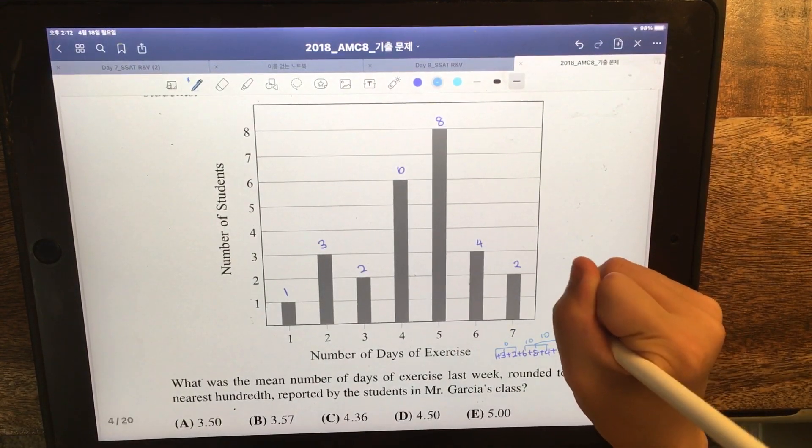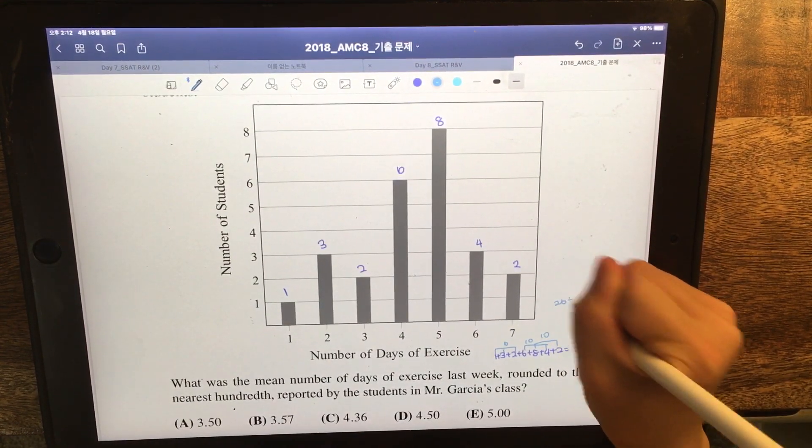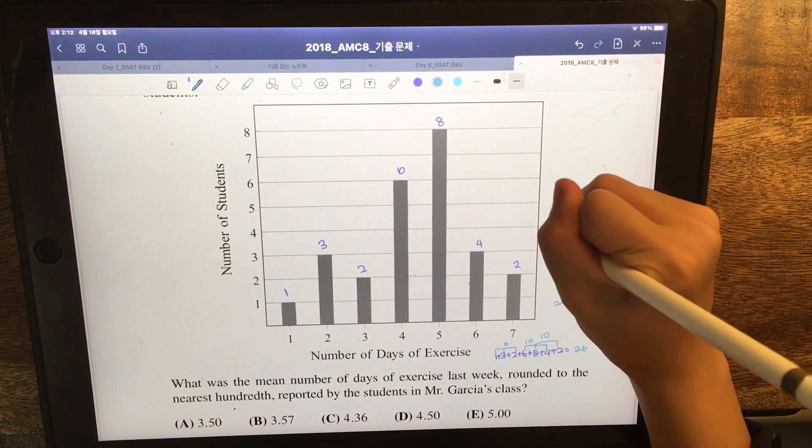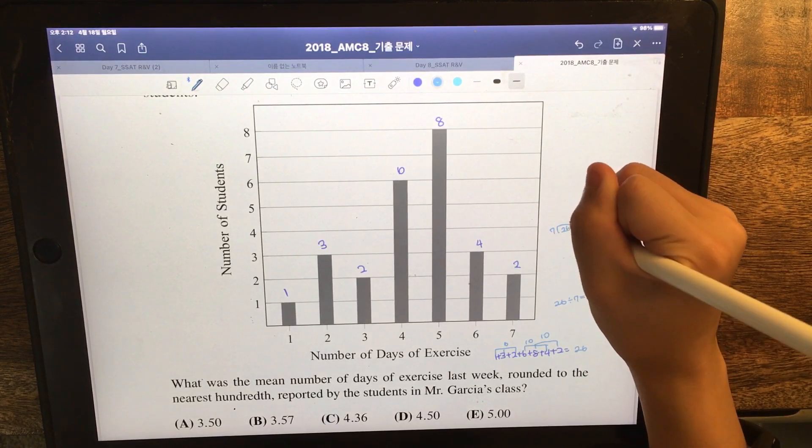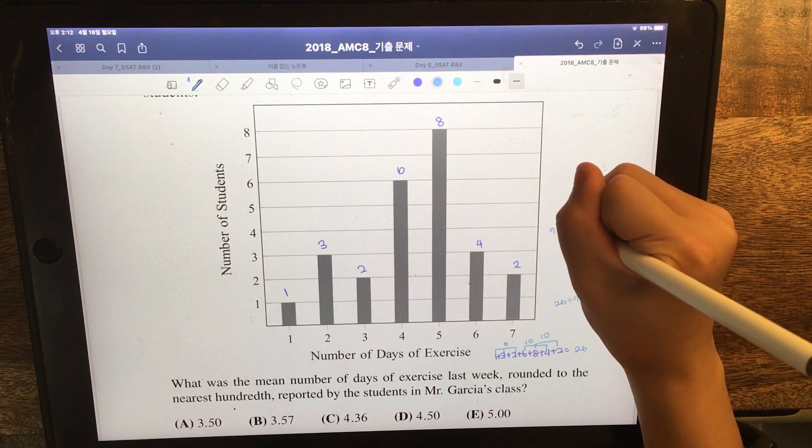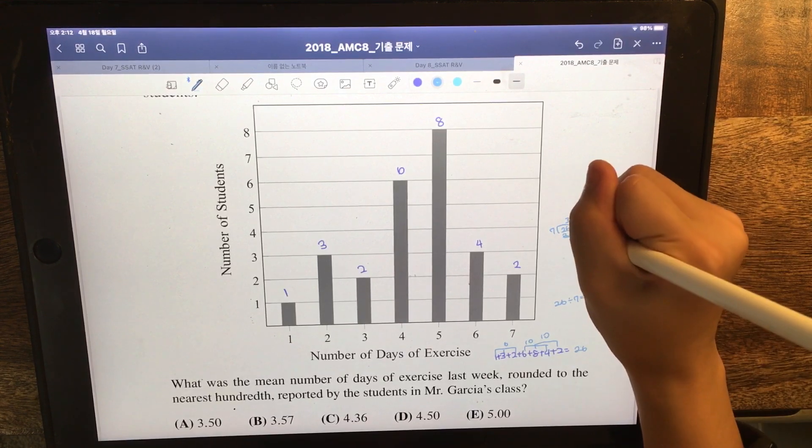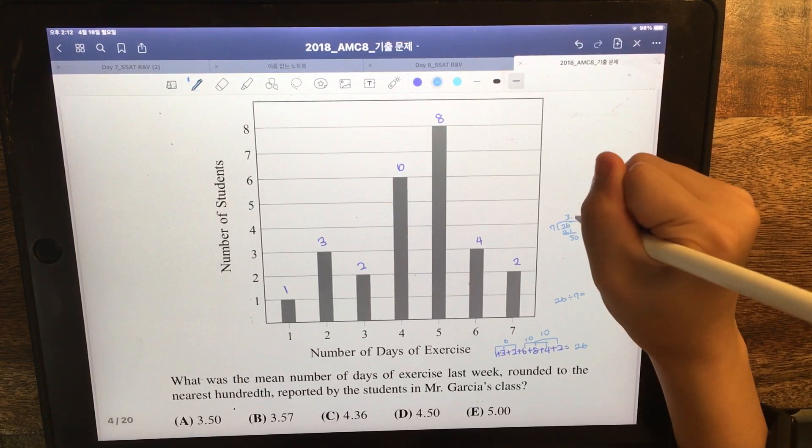What we want here is 26 divided by 7 equals. Then, we're going to go with the test. Now, we're going to go into a multiple times.